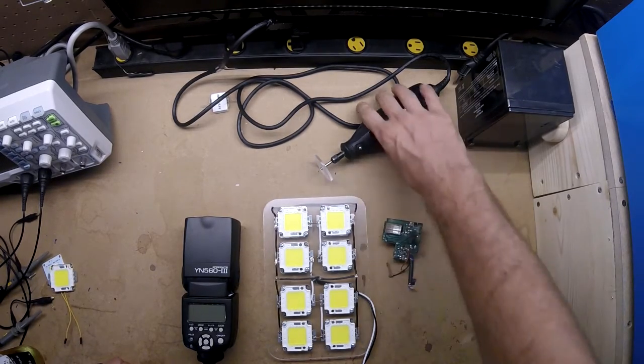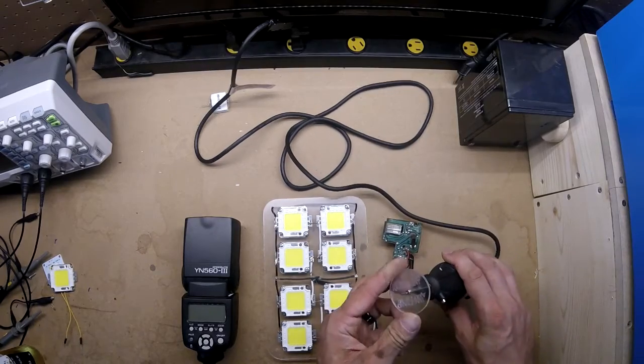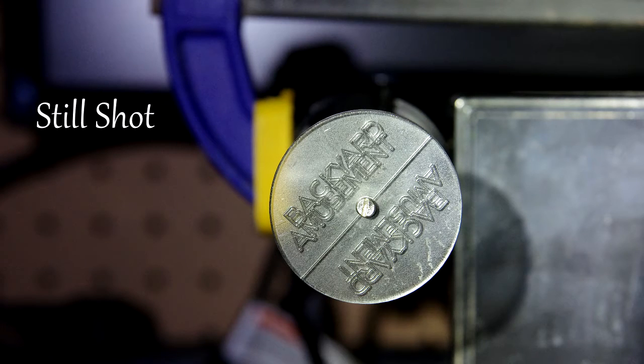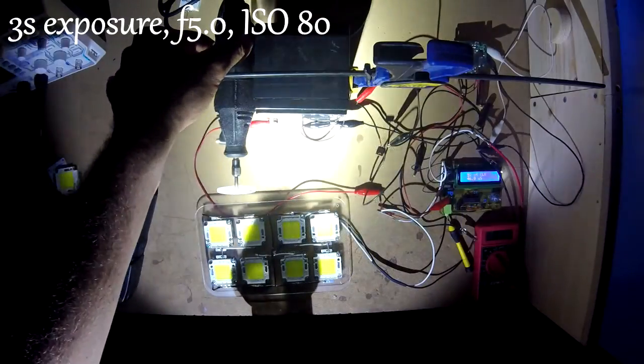In this test I will be using the same acrylic disc mounted to a Dremel tool that we used in the second video, that we have determined the outside edge to be traveling approximately 300 feet per second. For this test we will be using a 3 second exposure with an f-stop of 5.0 and an ISO of 80.